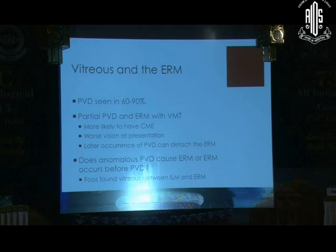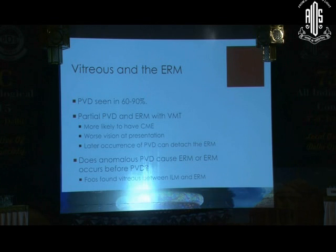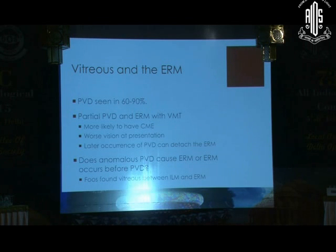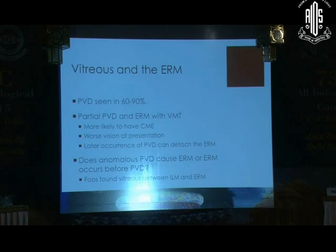Partial PVD with vitreomacular traction is more symptomatic and causes more structural damage than a full PVD with an epiretinal membrane. With partial PVD and VMT, there is more likelihood of cystoid changes in the retina and worse vision at presentation. Sometimes if patients keep postponing surgery, a late-onset PVD can actually detach the epiretinal membrane and they can be cured of all symptoms. The controversy remains: did the PVD cause the ERM because of schisis, or did the ERM occur before the onset of PVD? There is a histopathological study by Fuchs showing vitreous gel between the internal limiting membrane and the epiretinal membrane, suggesting the ERM may have grown even before the vitreous separated.